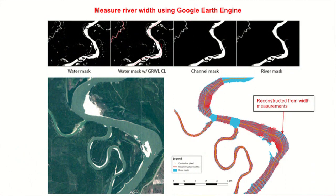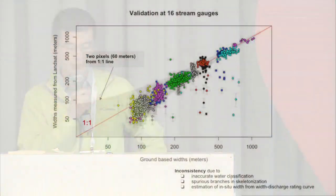We are developing our algorithm in Google Earth Engine. So far we've been able to extract rivers from the water mask using the GRWL database centerlines, derive the centerlines, and make width measurements at each centerline location. To show our first results, we are comparing them to in situ data from 416 gauges in the United States.